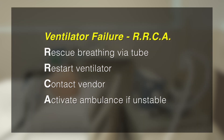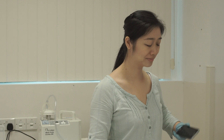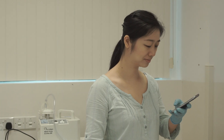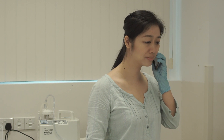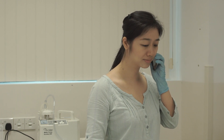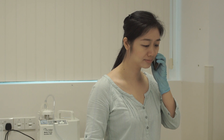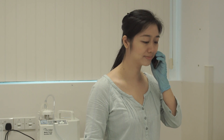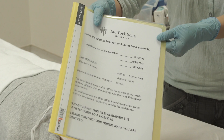C is for contact the vendor. Contact the vendor for a replacement machine, even if you have successfully restarted the ventilator. Your vendor should be able to retrieve the settings from the faulty machine. You may also refer to your home file for the latest settings.